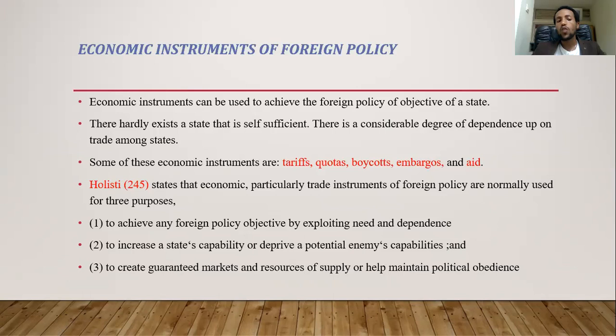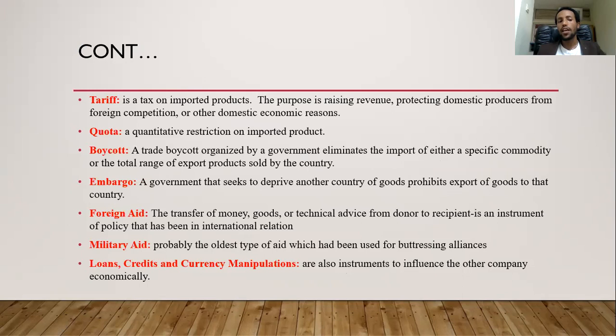The three purposes of economic instruments are: first, to achieve foreign policy objectives by exploiting need and dependency; second, to increase the state's capability or to deprive potential enemies of their capability; and third, to create a guaranteed market and resource supply, or to help maintain political obedience. By giving or prohibiting market access, you can achieve your foreign policy objective.